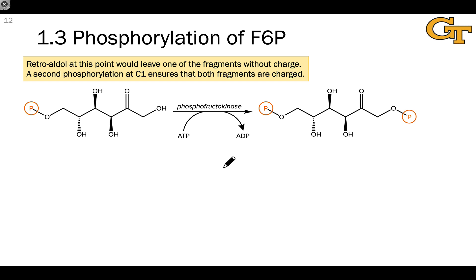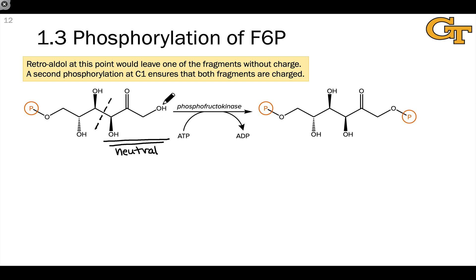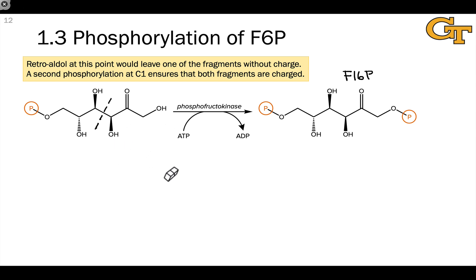Step three of stage one is another phosphorylation reaction. What's coming in the near future is a retroaldol reaction that splits the six-carbon glucose into two three-carbon fragments. But if this occurred right now, the right-hand half of the molecule would be left without charge — creating a permeability issue, as that resulting three-carbon compound could easily diffuse through the cell wall and out of the cell. To prevent that, phosphorylation occurs at carbon-1, giving fructose 1,6-bisphosphate, F1,6P. Retroaldol of this compound leads to two charged fragments, ensuring that the cell can keep those metabolites inside and avoid diffusion through the cell wall.